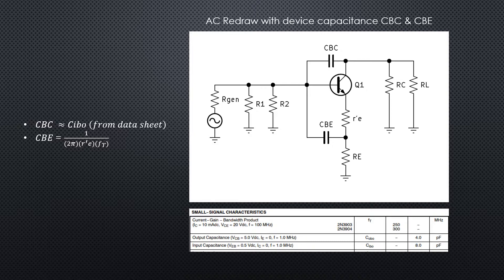You need to look that up for the transistor you're working with. CBE is equal to 1 divided by 2π R prime E times the gain bandwidth product, which is FT, also in the data sheet.